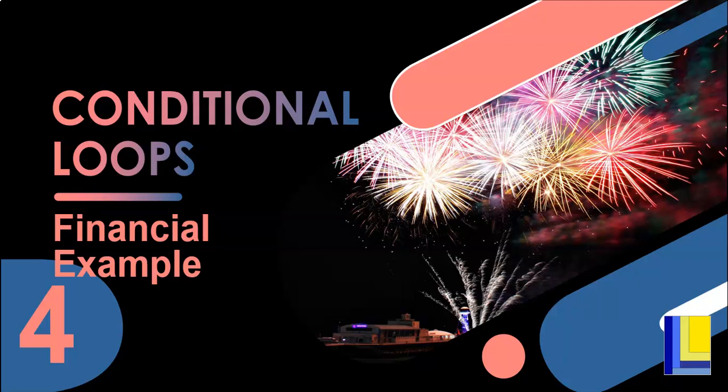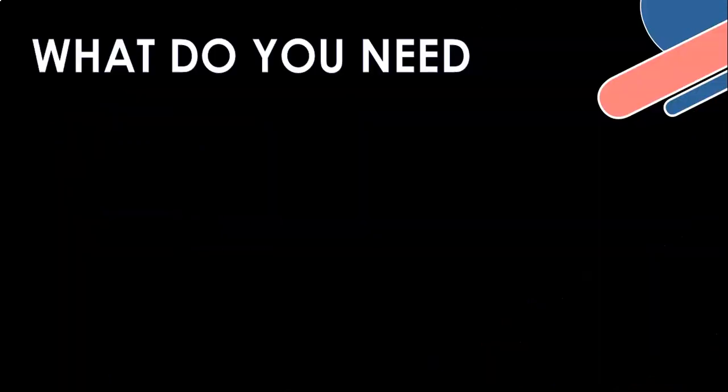Part four of our conditional loop series. We're going to look at a financial example because we all like money and we want to talk about how we can use loops to determine money problems or money solutions. I want to find out how long it's going to take me to get to a certain goal, so I don't know how many times to do the loop - that's why I'm using a conditional loop.